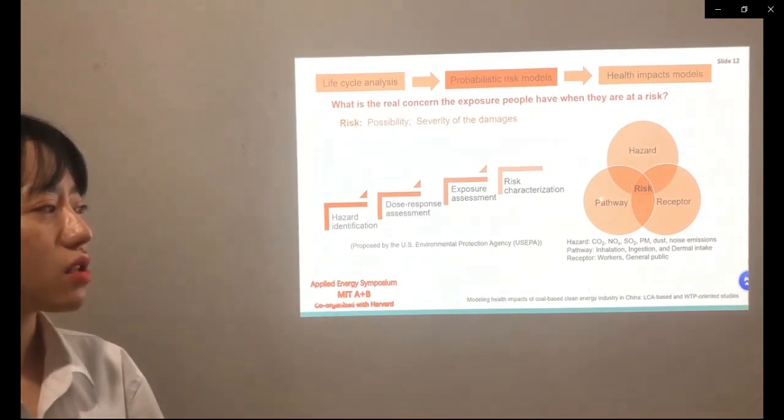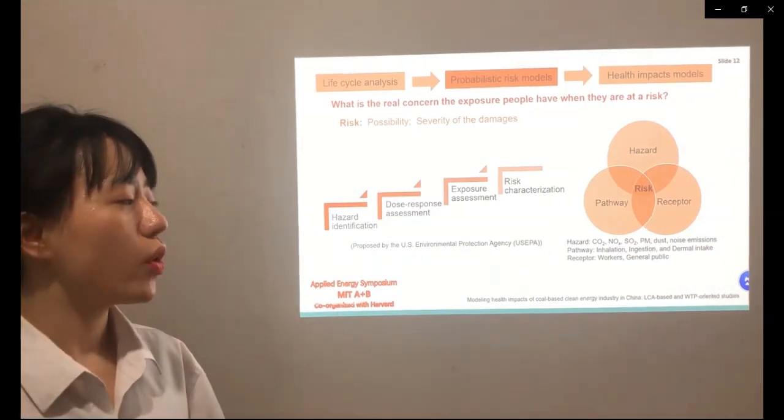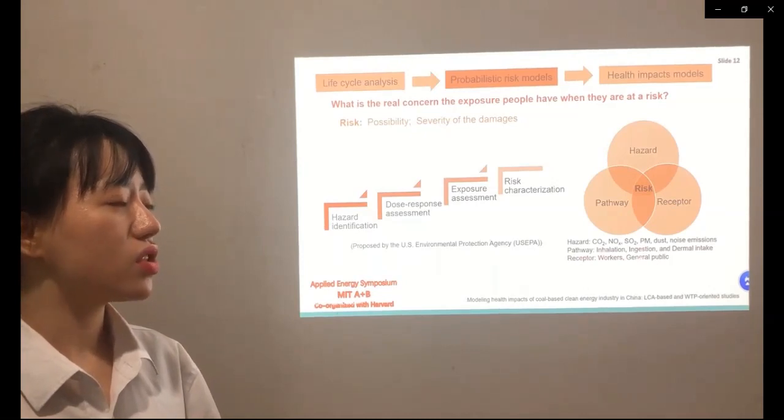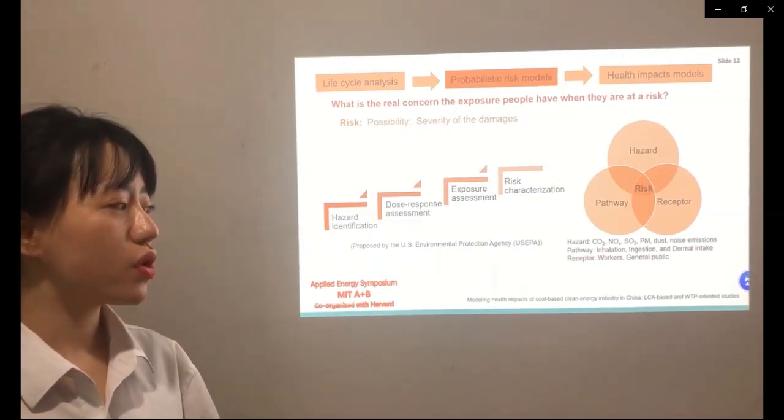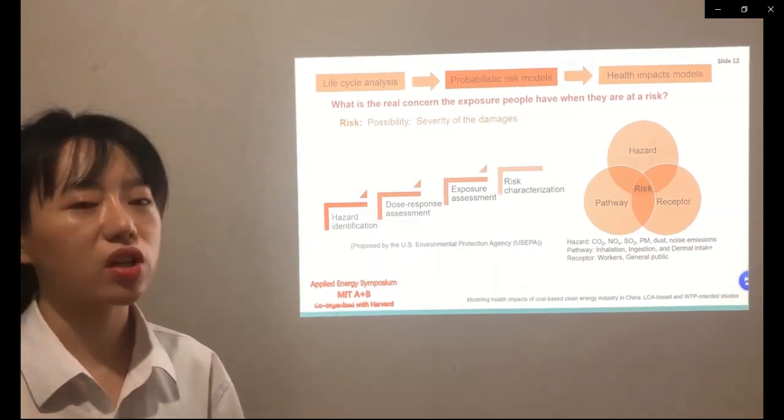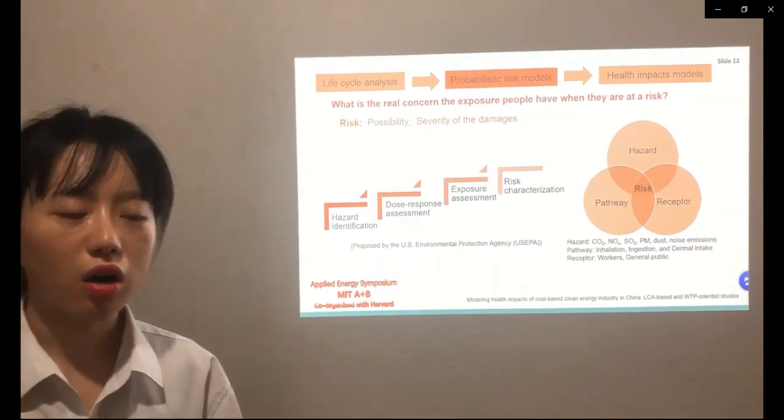Based on the three elements of risk, we usually divide the pathways into inhalation, ingestion, and dermal intake. As for the exposure receptor, we usually consider the workers and general public as our objects.